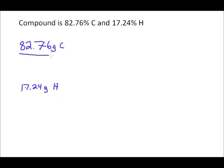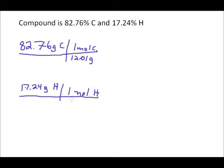Now we just want to do some dimensional analysis. We know that one mole of carbon has a mass of 12.01 grams, and we know one mole of hydrogen has a mass of 1.01 grams. This will allow us to calculate the number of moles for each element present in this compound. 82.76 divided by 12.01 works out to be 6.89 moles of carbon, and 17.24 divided by 1.01 works out to be 17.07 moles of hydrogen.